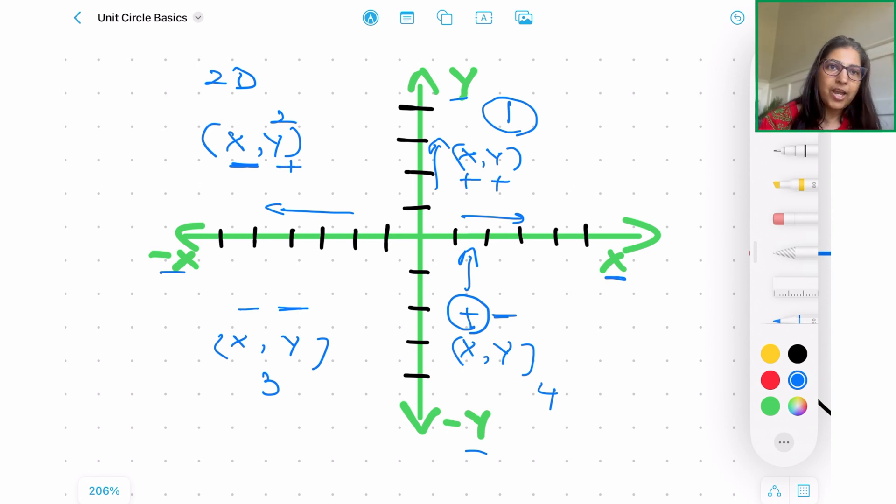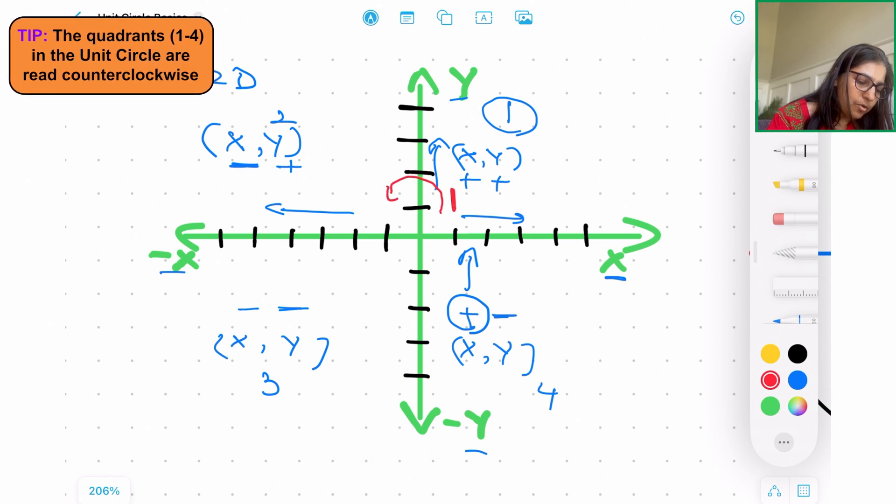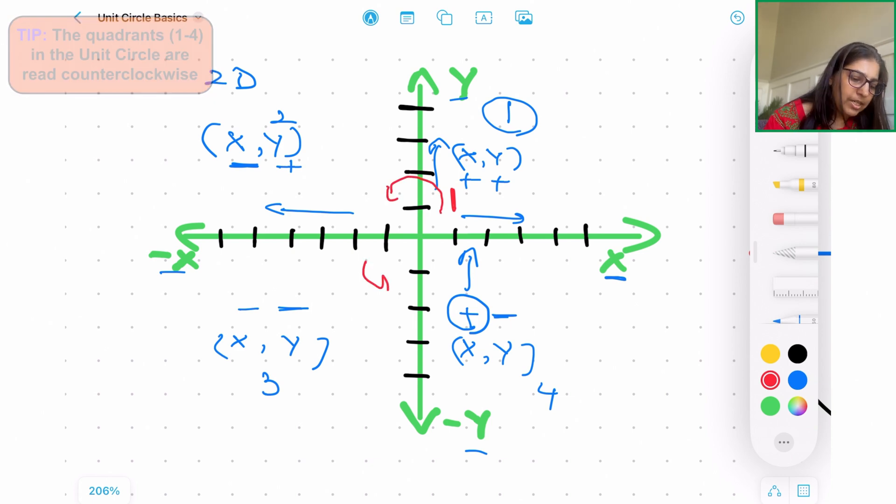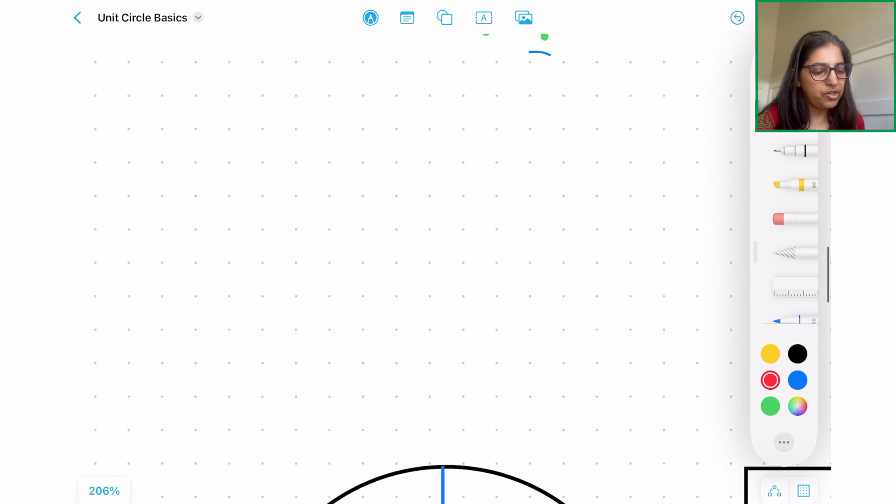Another idea that we need to understand while reading coordinate axis or a unit circle is we go around in a counterclockwise direction. As you notice, the first quadrant is right here, then you're going to the second quadrant, third quadrant, and fourth quadrant. We are going in a counterclockwise direction—that is considered a positive measurement.